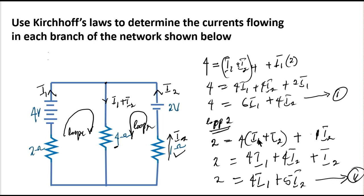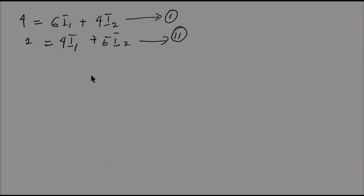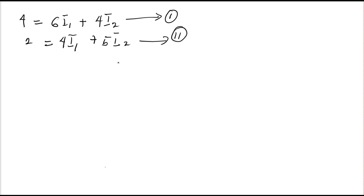Now you can see that we have 2 unknowns and 2 equations. That tells me I'll need simultaneous equations. To solve this simultaneously, I want to use elimination method because I can see that I1 in equation 1 and I1 in equation 2 look related. Let's multiply equation 1 by 2, then multiply equation 2 by minus 3. Equation 1 times 2 becomes 8 equals 12I1 plus 8I2, while equation 2 becomes minus 6 equals minus 12I1 minus 15I2.